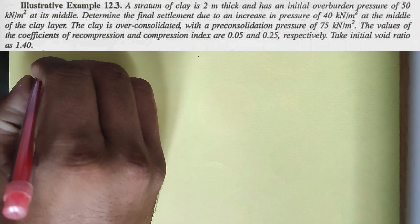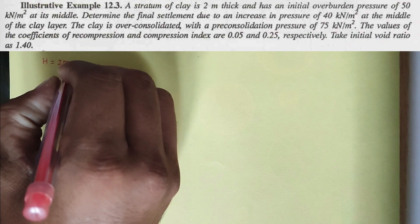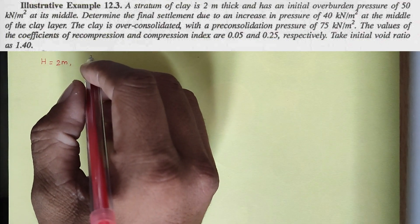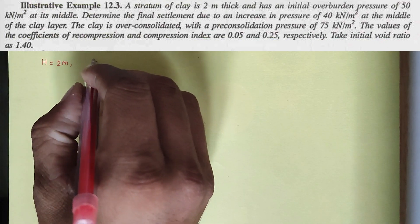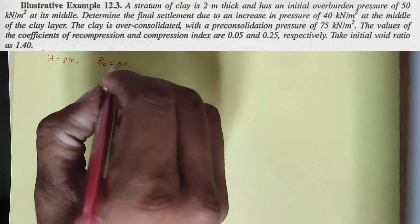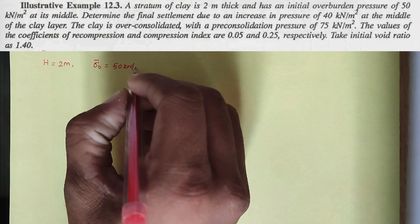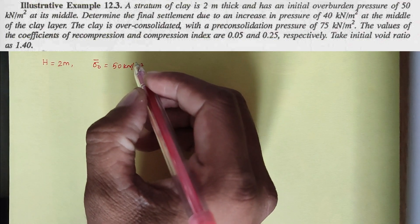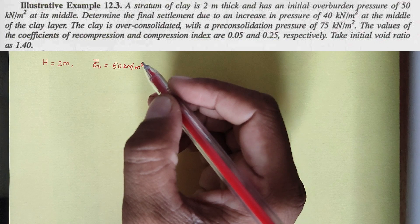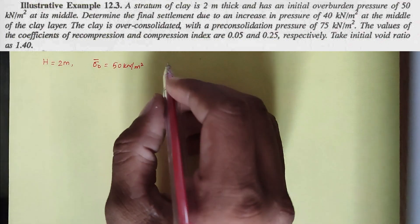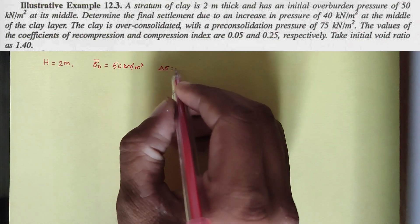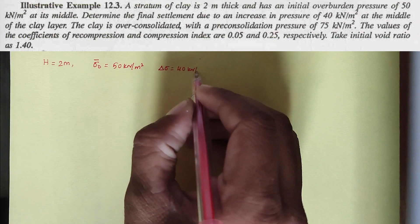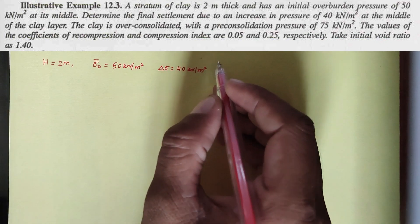The height h is equal to 2 meters. The initial overburden pressure σ₀ is given as 50 kN/m². At the middle of the layer, determine the final settlement due to an increase in pressure Δσ equal to 40 kN/m².